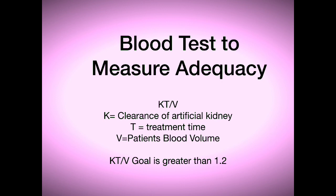We don't want someone to have a KT over V of like 12, because they're going to have to stay on the machine like 24 hours a day. So around about four, four and a half hours, the average patient runs on the machine. Then we measure how well we cleaned their blood, and that gives us the adequacy.